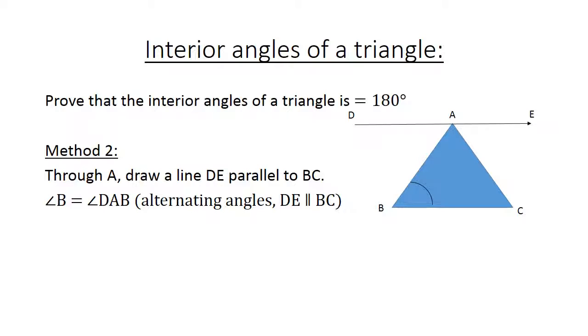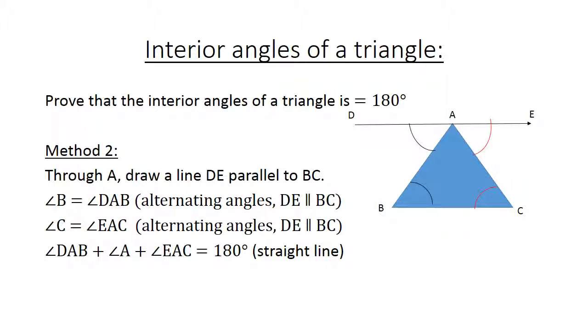Angle B equals angle DAB. Reason: alternating angles, DE parallel to BC. Angle C equals angle EAC. Reason: alternating angles, DE parallel to BC. Angle DAB plus angle A plus angle EAC equals 180 degrees on a straight line. Therefore angle A plus angle B plus angle C equals 180 degrees.